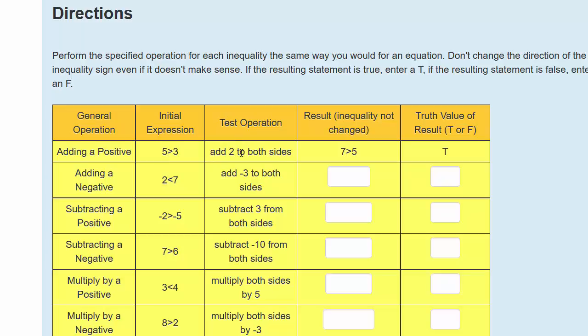To test this out, we're going to add a 2 to both sides. So we'll add a 2 to the left and a 2 to the right-hand side, and I get 7 is greater than 5. This is true, and so I'll enter a T here.